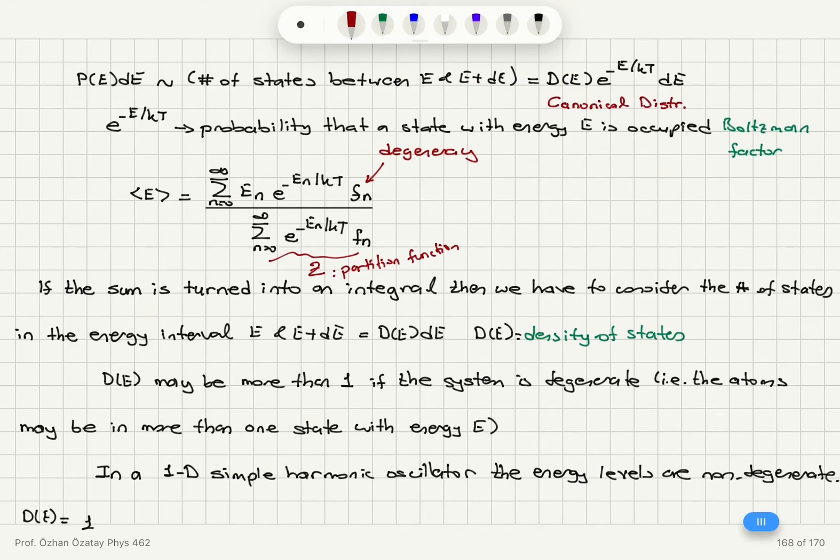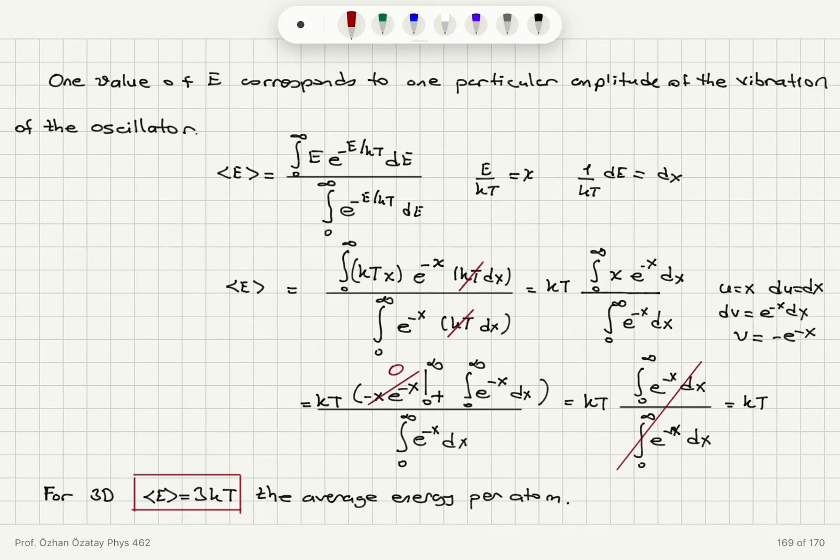If the sum is turned into an integral, then we have to consider the number of states in the energy interval between E and E plus dE. The density of states may be more than one if the system is degenerate. But in a one-dimensional simple harmonic oscillator, the energy levels are non-degenerate. Density of states is one, because one value of energy corresponds to one particular amplitude of vibration. Energy is a continuous variable.